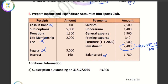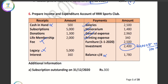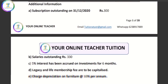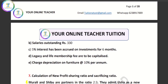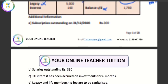Honorarium is not an expense in the capital sense — it is an expenditure. General expense is an expenditure. Printing expense is an expenditure. There are no adjustments needed for those three items. The last item is furniture. Because it is a fixed asset, it does not appear in the Income and Expenditure account. There is no income or investment entry for it. Then there are no adjustments for subscription, salary, interest, legacy, and life membership — those are done. We will start with the balance sheet.